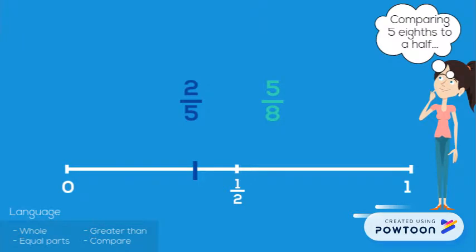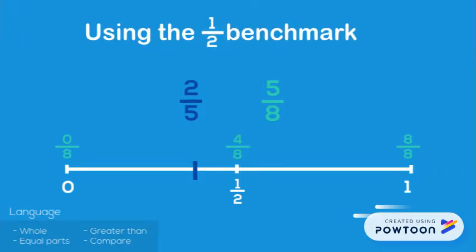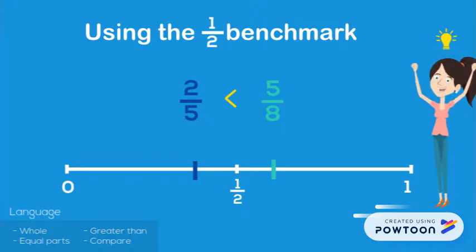Now let's compare the second fraction, 5/8, using the half benchmark. We can see that 4/8 is half of the whole and 5/8 is just over half. So now we can see that 5/8 is greater than 2/5.